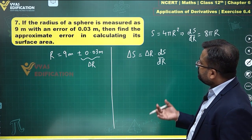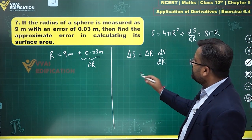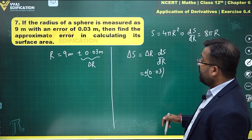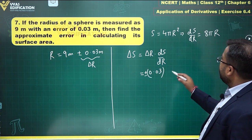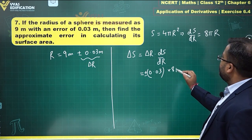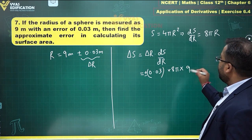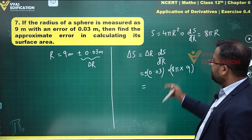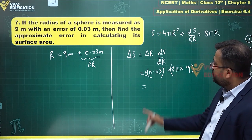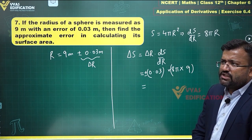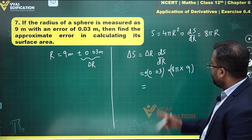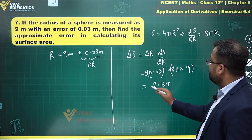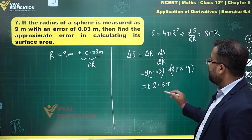So delta s equals delta r, which is plus or minus 0.03, times ds/dr, which is 8π, and r is 9. So we get 8π times 9: 9 times 8 is 72, and 72 times 3 is 216, which gives us 2.16 with two decimal places, and we have pi as well.